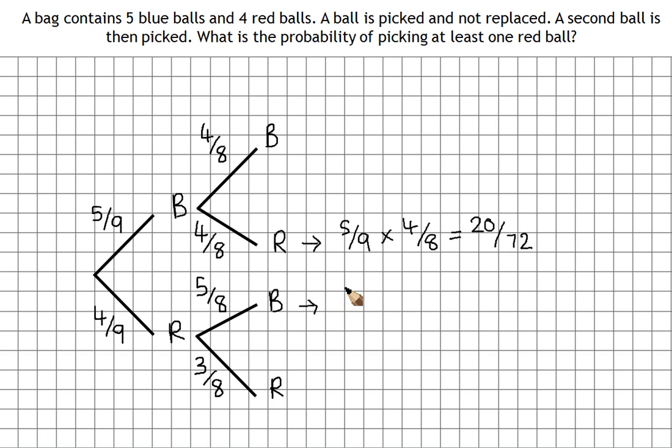For this branch here, we've got four ninths times five eighths. So again, twenty over seventy-two.